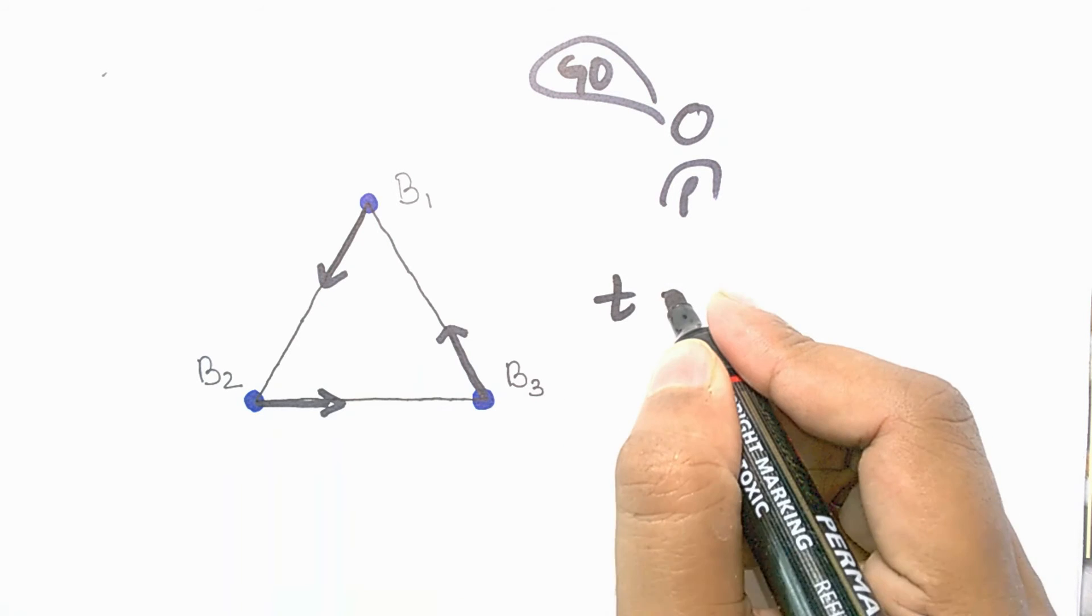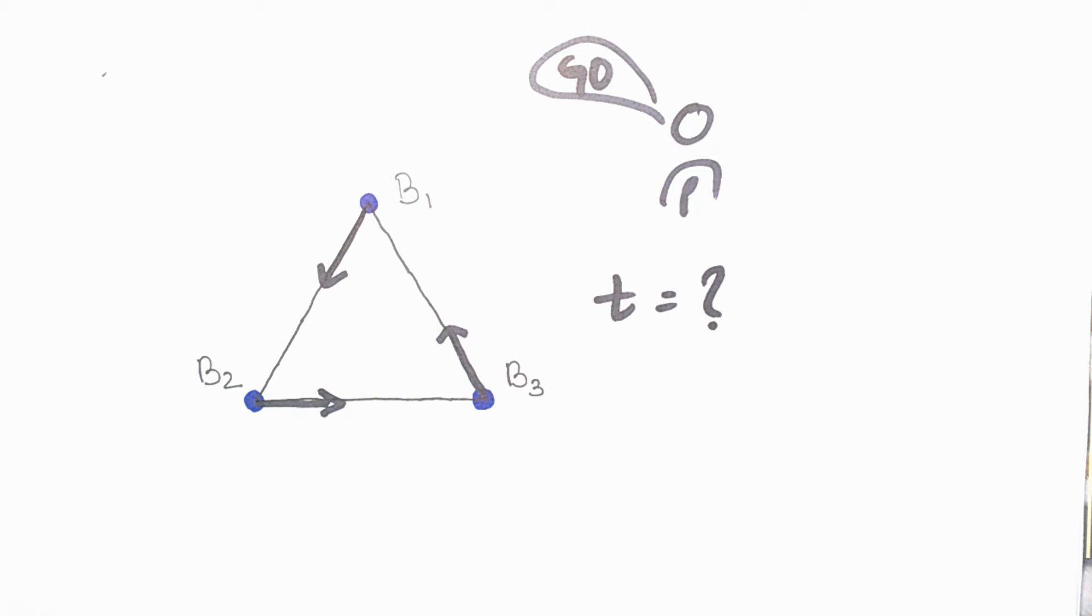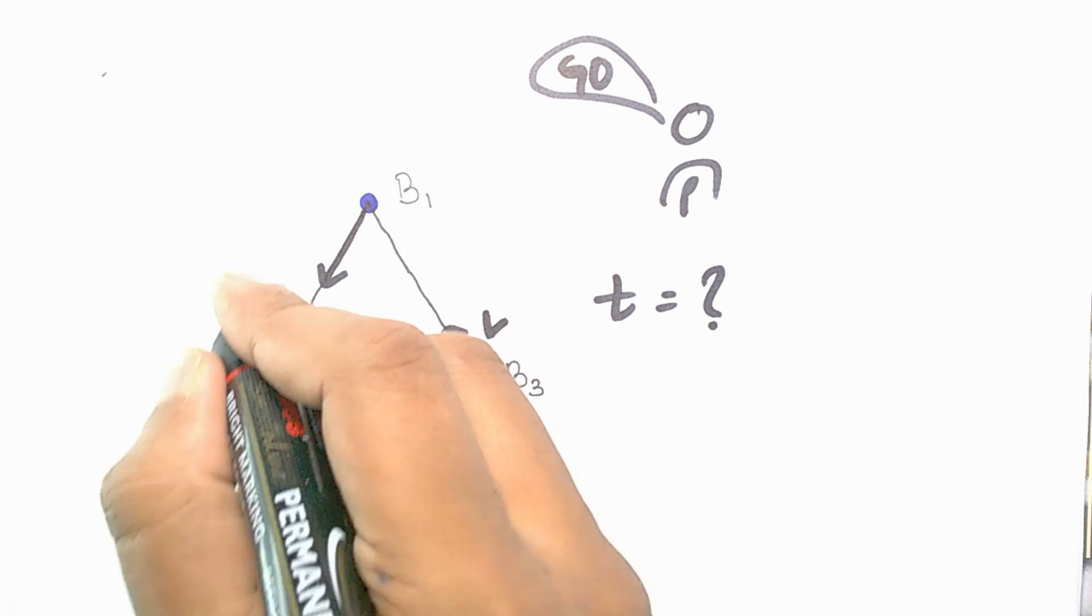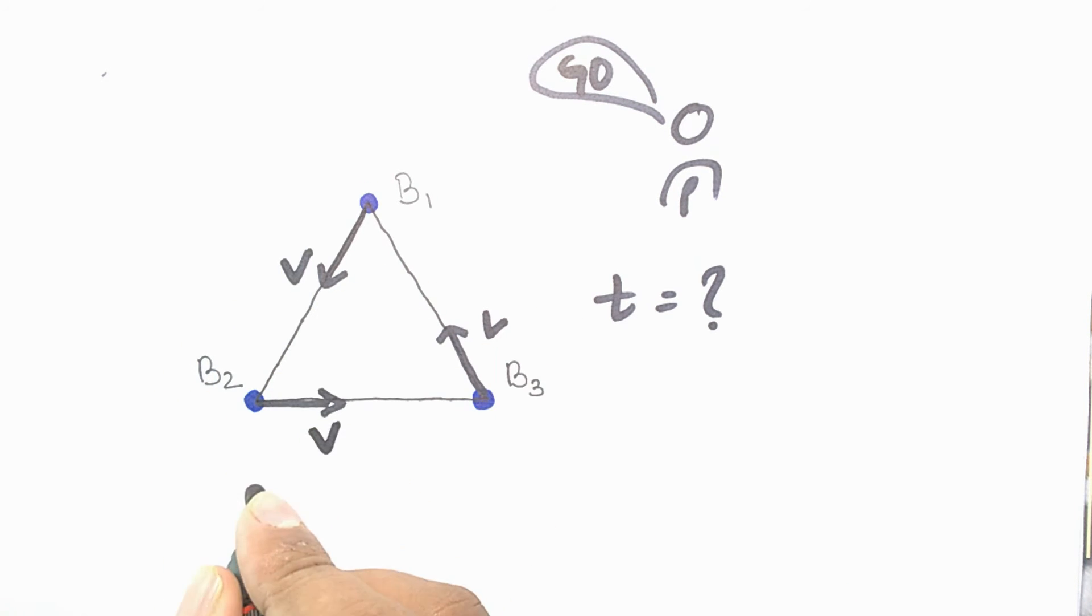Now what is our job today is to decide in what time they are going to meet, given that each body can move with the maximum velocity of v and the size of this triangle is a meters.